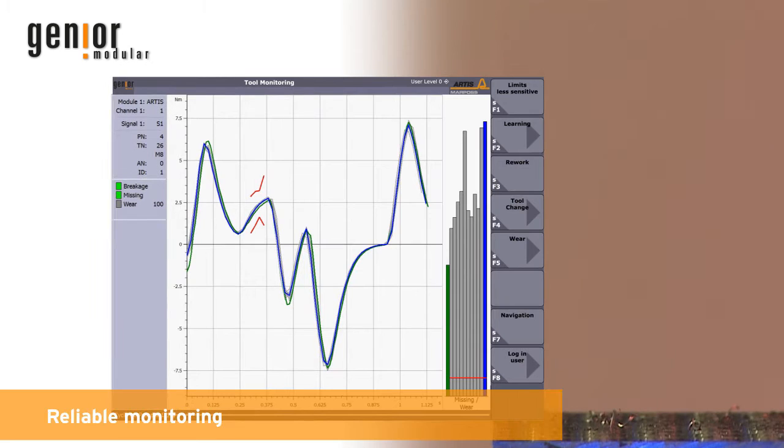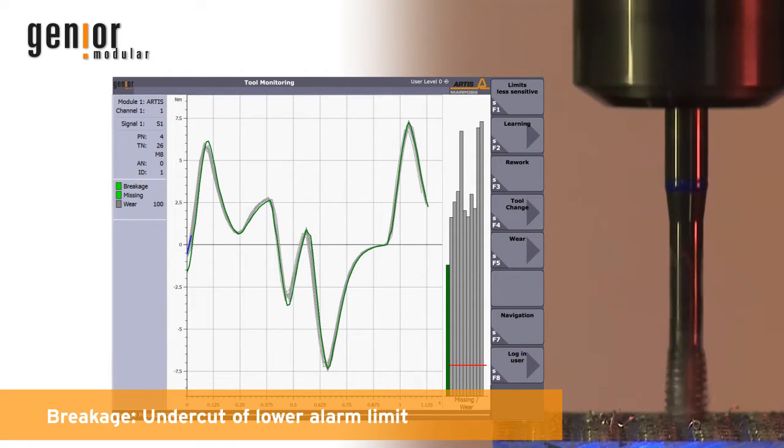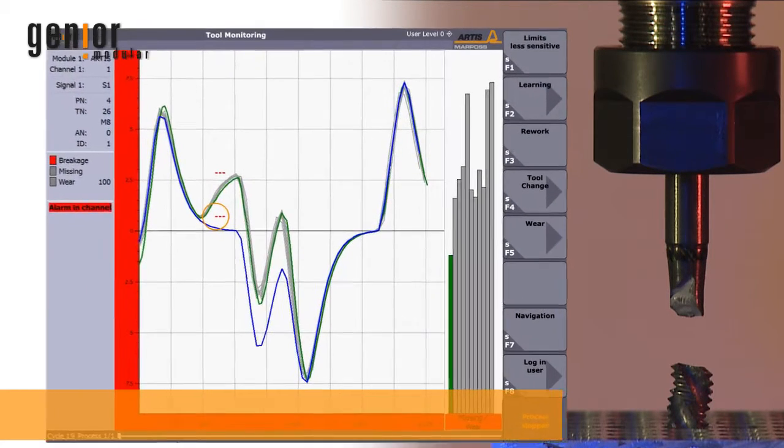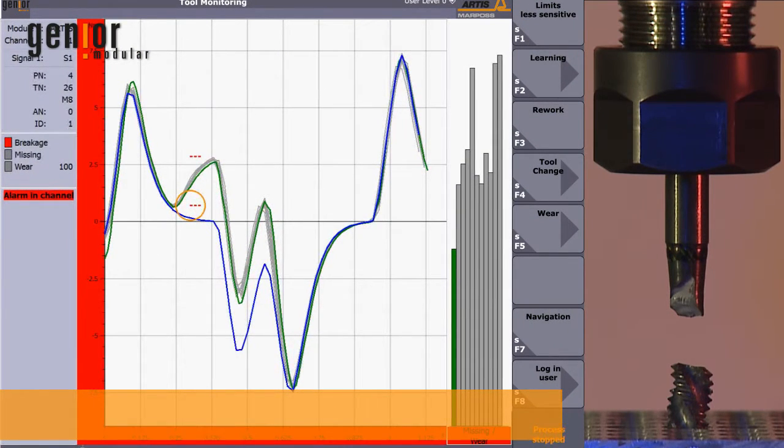How an alarm originates: With a broken or missing tool, there is no load change caused by material contact. The lower alarm limit is undercut and the alarm is triggered.